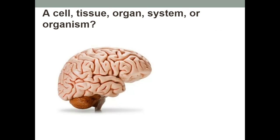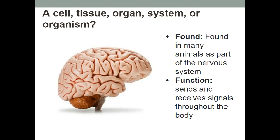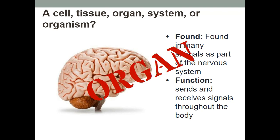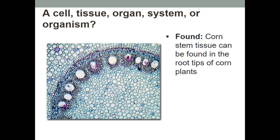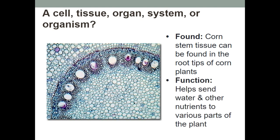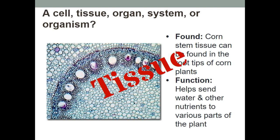What do you think this brain is? Do you think it's an organ? Yes, that's correct. And here we've got a dissection of the stem of a corn plant. It sends water up and down the plant — it is tissue.